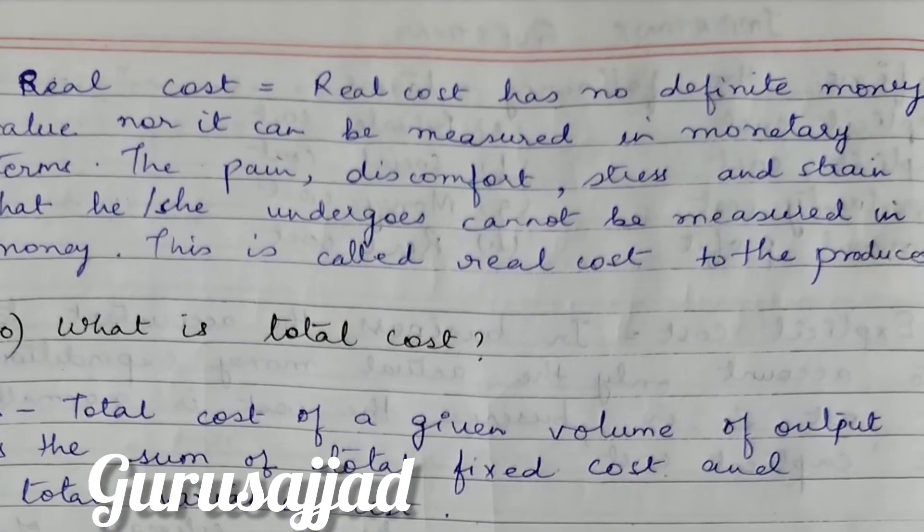Next and final definition is real cost. Real cost has no definite money value, nor can it be measured in monetary terms. The pain, discomfort, stress, and strain that the producer undergoes cannot be measured in money — this is called real cost. We actually cannot measure real cost. It is the cost that an entrepreneur bears to produce any product, and we cannot say the producer's pain was worth Rs. 100 or stress worth Rs. 500. This is why it falls under real cost — the stress of the entrepreneur and workers.